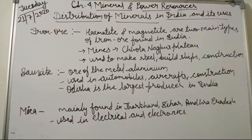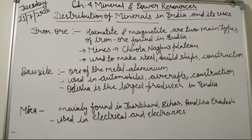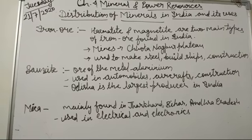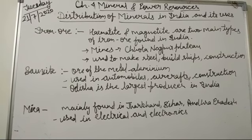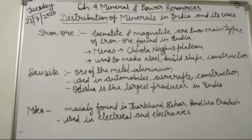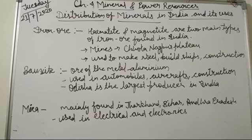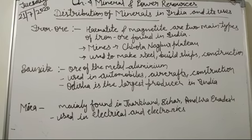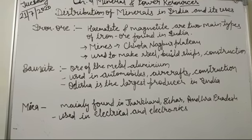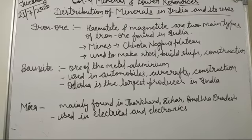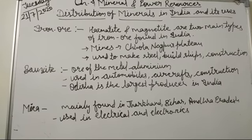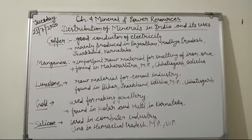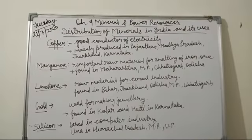The next mineral is mica. India is the largest producer and exporter of mica in the world. It is used in the electrical and electronic industries. Its deposits mainly occur in Jharkhand, Bihar, Andhra Pradesh and Rajasthan.